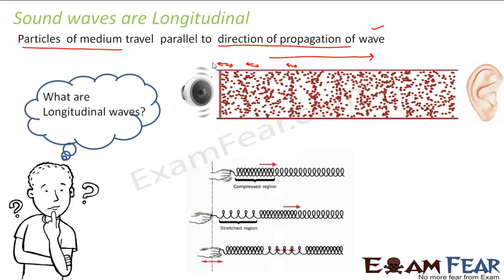Let us take another example that portrays longitudinal waves. Suppose you have a spring — if you stretch the spring and release it, the spring will oscillate. In this case, some regions of the spring have particles that are compressed, and some regions the particles are far away — compressed, then far away again. That is how the particles are oscillating. At the same time, if you see how the disturbance is moving: initially the disturbance was here where particles were compressed, then the particles are compressed in the middle region, then they are compressed further along — so it gradually moves in this direction. Here also, the particles are oscillating in a direction parallel to the direction of propagation of the wave.